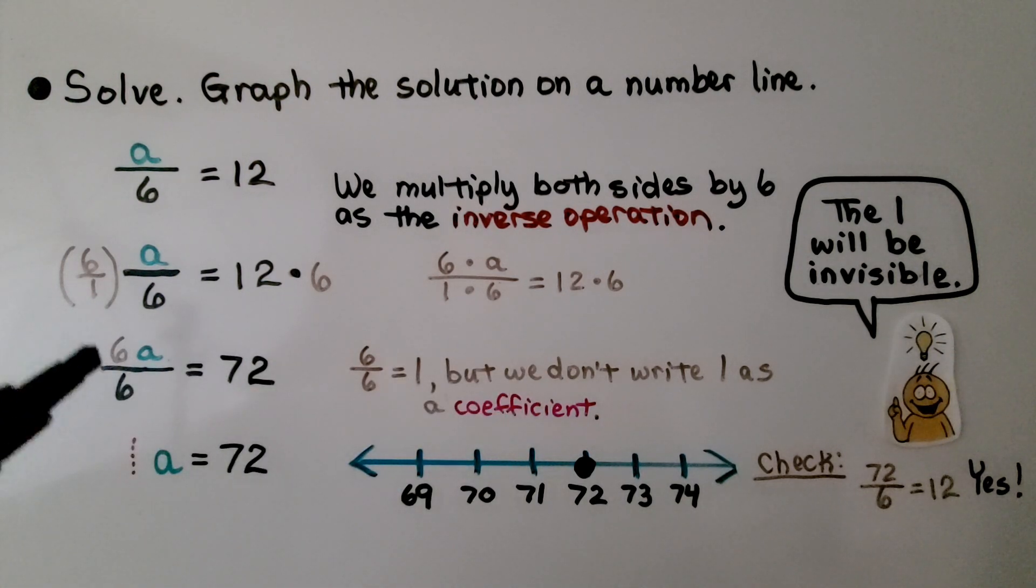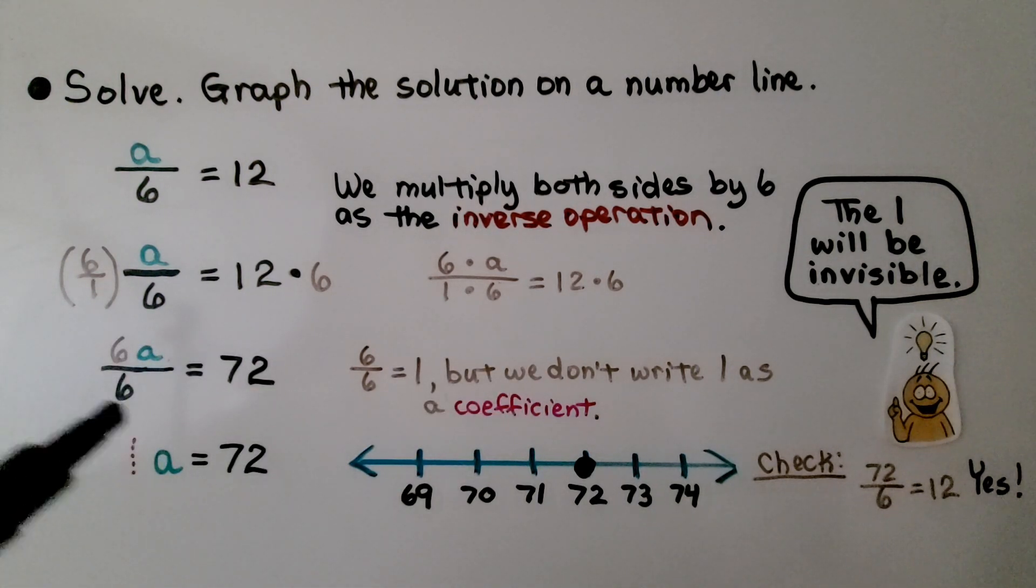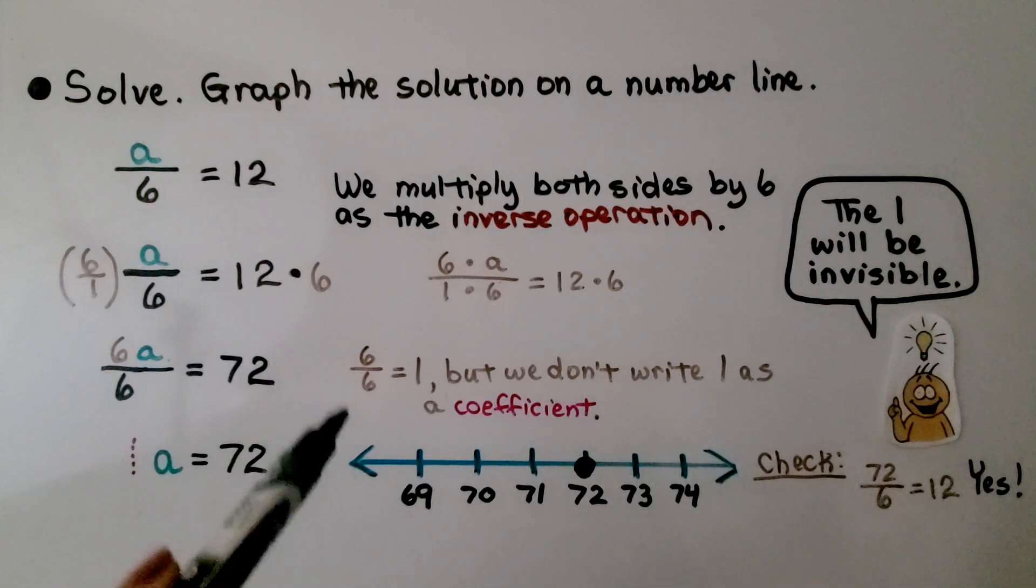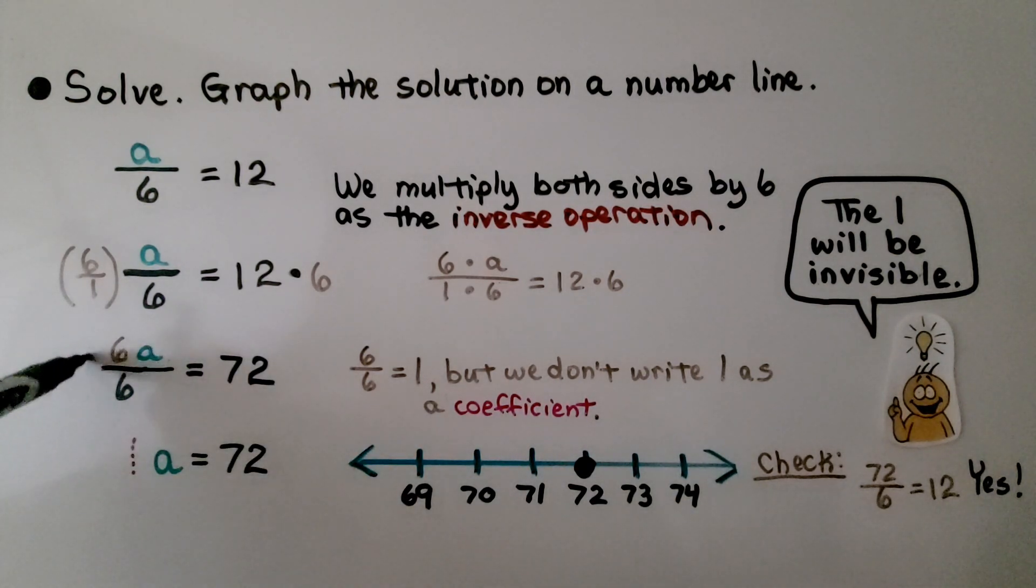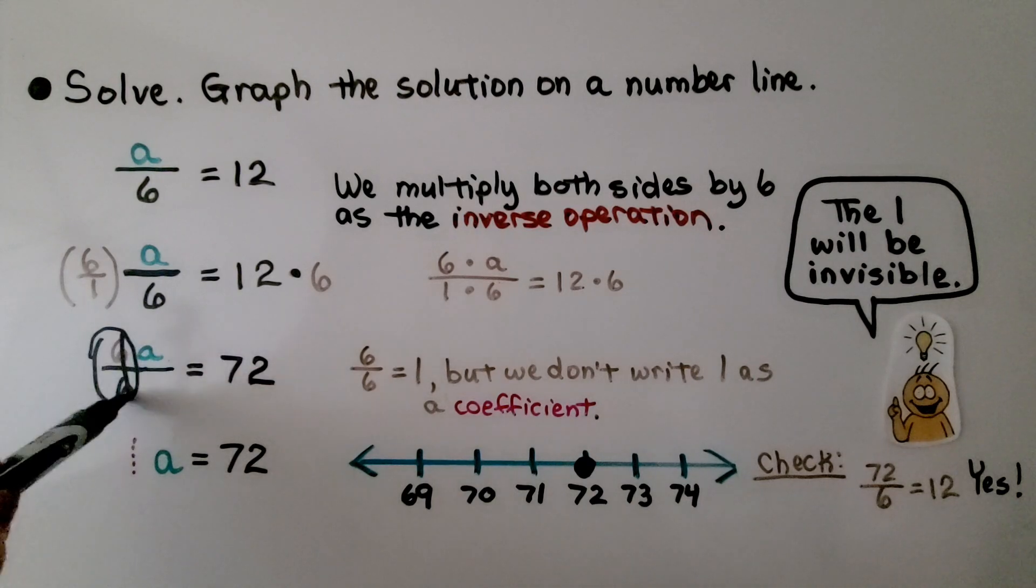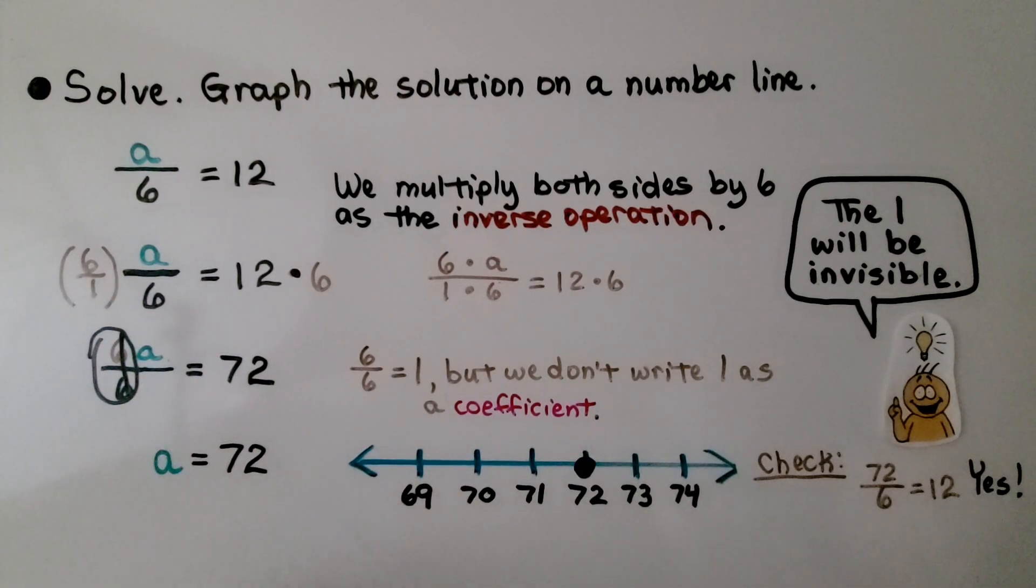That's going to give us 6a over 6 is equal to 72. And 6 over 6 is equal to 1. But we don't write 1 as a coefficient. We have a is equal to 72.